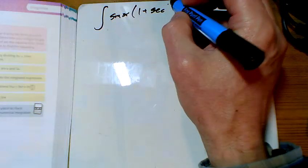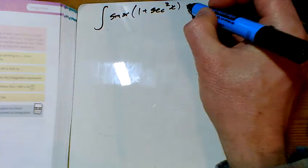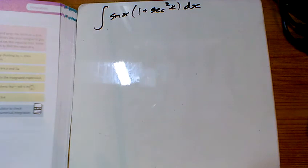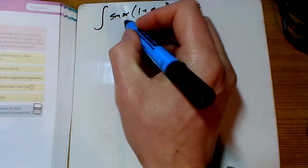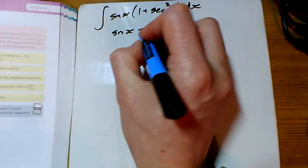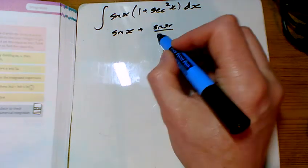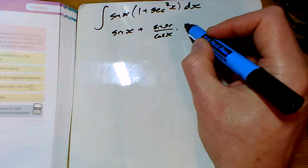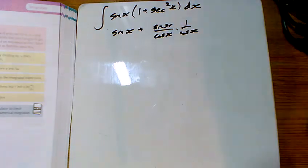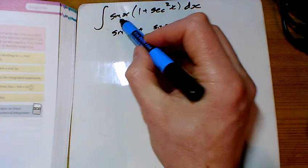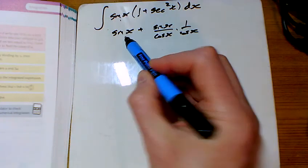For e we're doing sine x times by 1 plus sec squared x. Let's multiply this out so I've got a sine x and then I've got sine x sec squared which is a cos on the bottom. So I've done 1 times sine x is sine x, and sine x times sec squared I'll put in the cos on the bottom there.